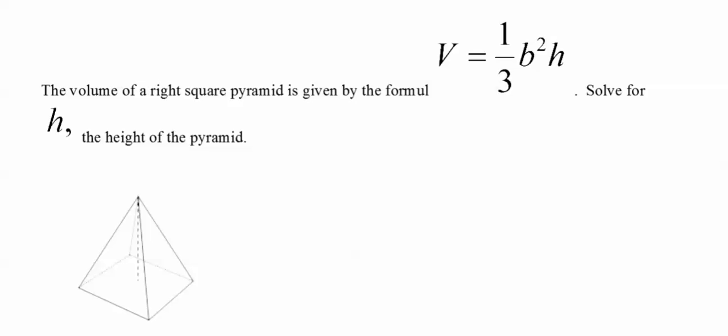If you look at this one, the volume of a right square pyramid is given by the formula V equals 1/3 B squared H. Solve for H, the height of the pyramid. Now, this is a little tricky, but all you got to do is just try to get H completely by itself.